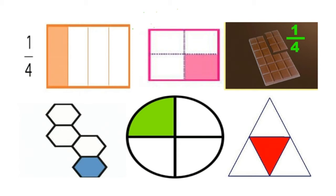One half of the circle is quarter. One box is divided into four equal parts. One circle is divided into four equal parts, and four shapes are shown here. One triangle is divided into four equal parts. This can be written as 1 by 4, that is quarter.